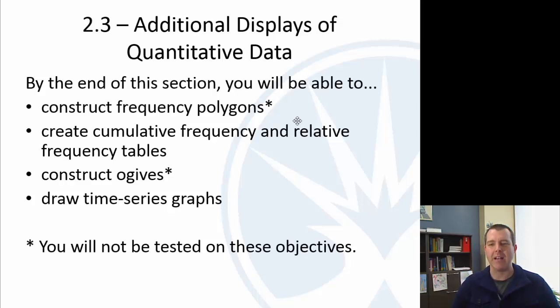We're going to talk about frequency polygons, cumulative frequency tables, ogives - and that's how you say that actually, yes, not ogives or whatever, it's a very odd word - some time series graphs. And you'll notice there's an asterisk there by a couple of them. The frequency polygons and ogives are very rarely used and so you're not going to be tested on those objectives.